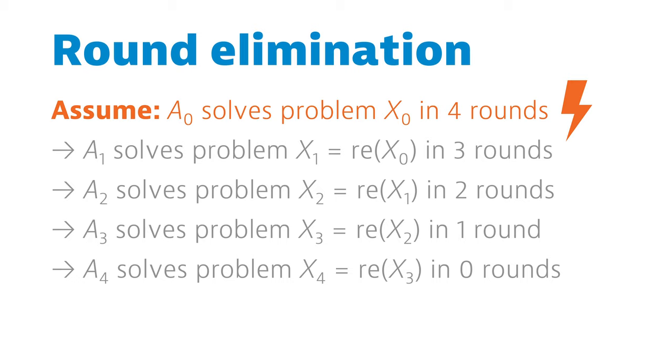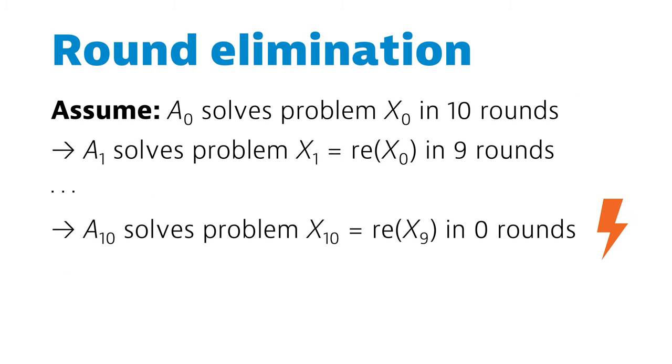And this is exactly what we wanted to prove. Of course, there is nothing magic about the value 4 here. If we can do 10 steps of round elimination, and still arrive at a problem that is not 0 rounds solvable, we know that the original problem cannot be solved in 10 rounds. If we can do any number of round elimination steps, then the original problem cannot be solved in constant time, and so on.